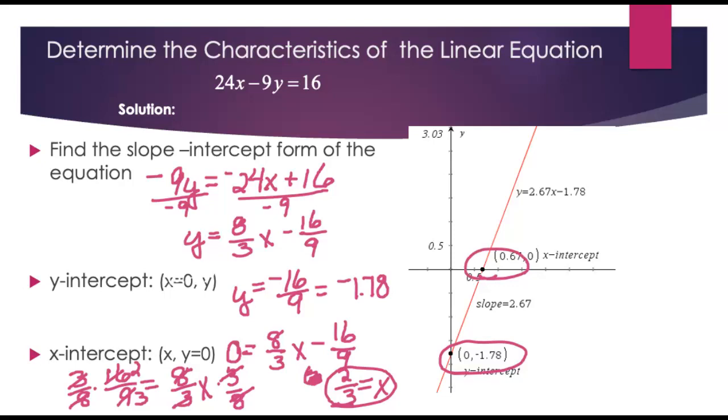So notice this is our x-intercept right here. And the slope of the line, that was up here in our equation for y equals mx plus b, that's 8/3, and that as a decimal is 2.67.